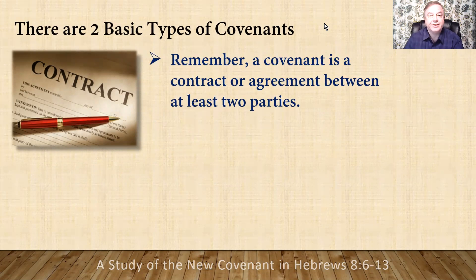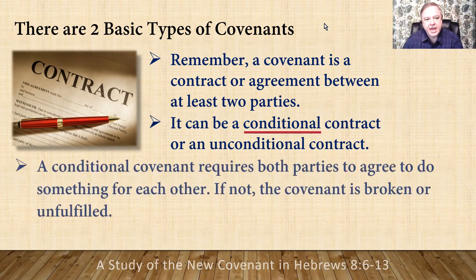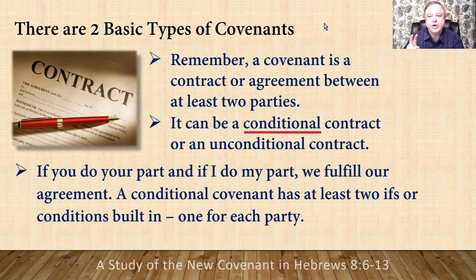Now, remember, a covenant is a contract or agreement between at least two parties. It can be a conditional contract or an unconditional contract. A conditional covenant requires both parties to agree to do something for each other — if not, the covenant is broken or unfulfilled. A conditional covenant has at least two ifs or conditions built in, one for each party: if and if.